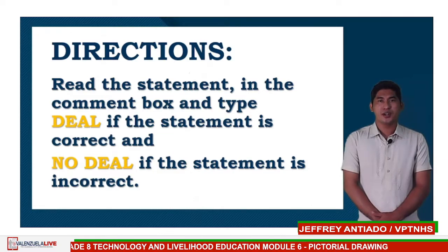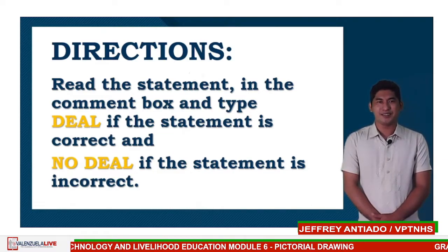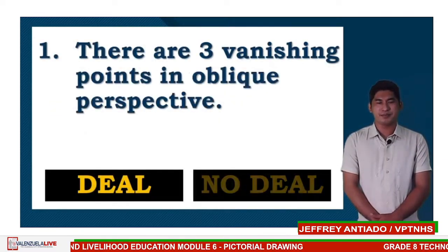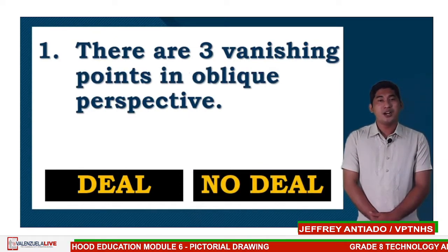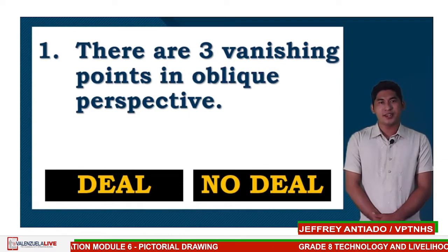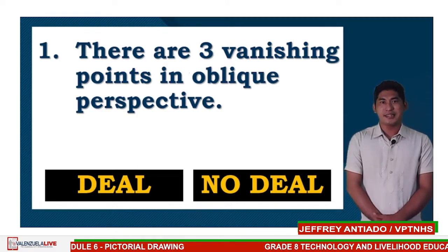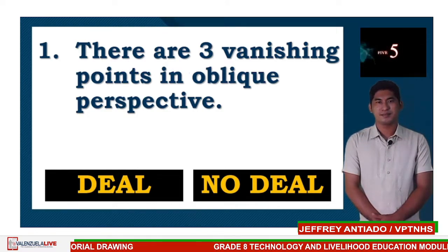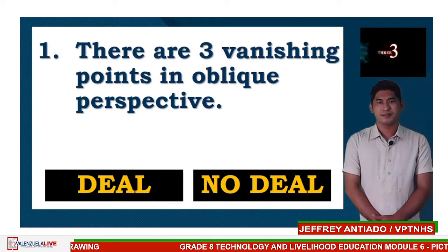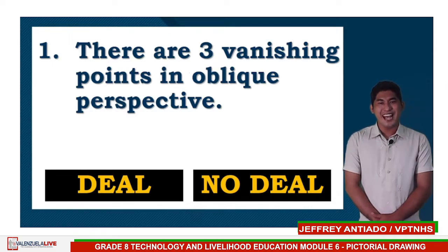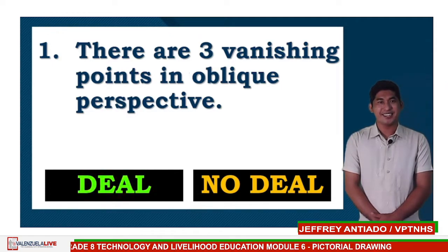Grade 8 learners, Deal or No Deal? Here is the first statement: There are 3 vanishing points in oblique perspective. Is it Deal or No Deal? And the correct answer is, it's a deal.